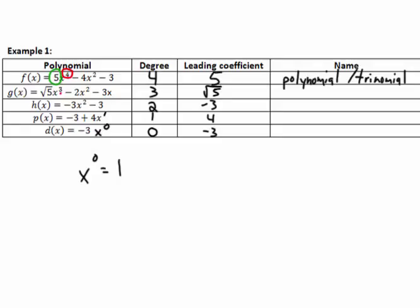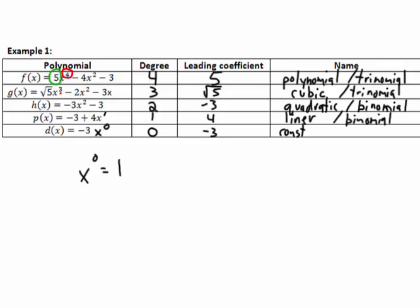These polynomials have special names when degree 3 or less. Degree 3 is a cubic polynomial — we might also call it a trinomial because it has 3 terms. Degree 2 is a quadratic, sometimes called a binomial because it has 2 terms. Degree 1 is linear, also a binomial with 2 terms. When we have a single term with no degree, that's a constant — and a single term is called a monomial.